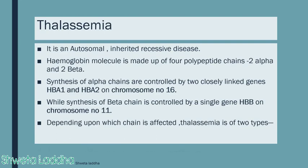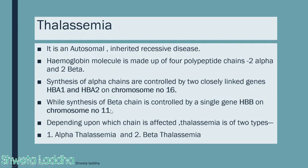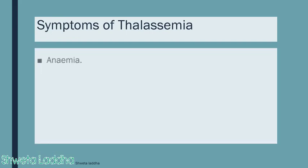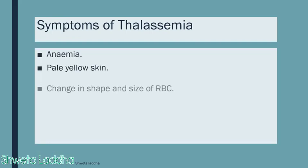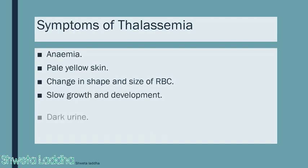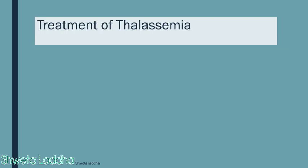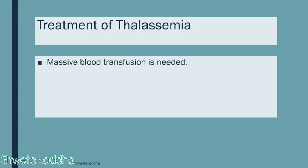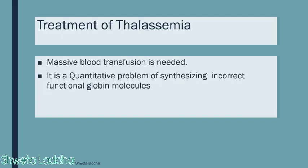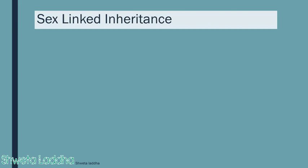Depending on which chain is affected, thalassemia is of two types. If the alpha chains are not synthesized properly due to a gene mutation on chromosome 16, it leads to alpha thalassemia. If the beta chain is not synthesized due to a gene mutation on chromosome 11, beta thalassemia occurs. Symptoms include anemia, pale/yellow skin, changes in RBC shape and size, slow growth, and dark urine. Treatment requires massive blood transfusion, as it is a quantitative disorder of globin molecule synthesis.